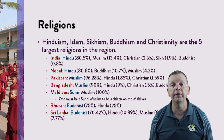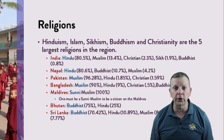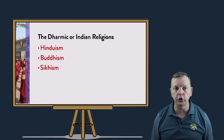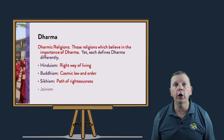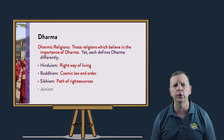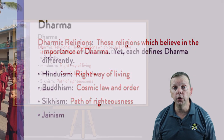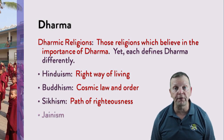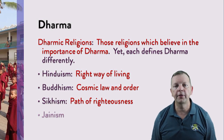And in a region of India known as Punjab, we find the Sikhs. Now, South Asia is important to the overall discussion on religion as it is the home of what we call the Dharmic religions — which is Hinduism, Buddhism, and Sikhism. They are called the Dharmic religions because they all believe in the importance of what is known as Dharma, yet they each define Dharma differently. Hindus see Dharma as the right way of learning. Buddhists define it as the cosmic law and order, while Sikhs call it the path of righteousness.